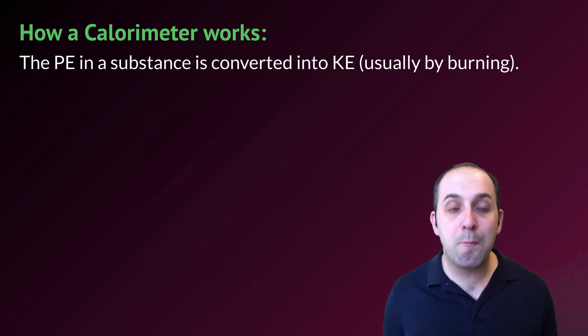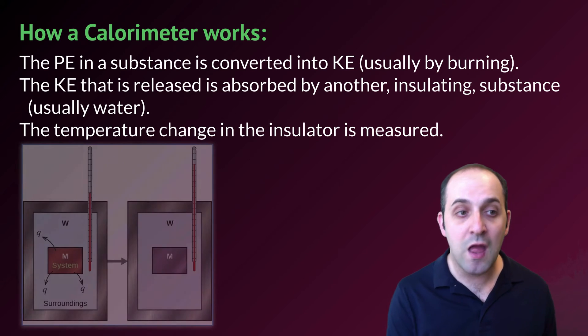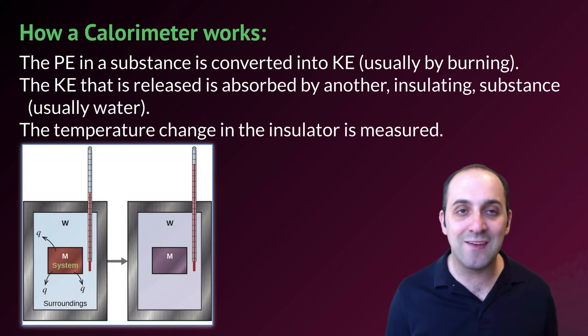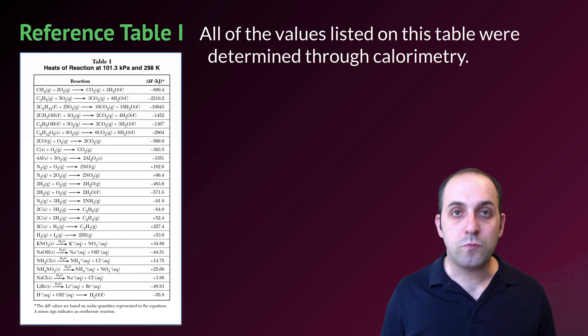The way a calorimeter works is pretty simple. The potential energy in a substance is converted into kinetic energy, usually by burning the substance. The kinetic energy that's released is then going to be absorbed by an insulating substance, which is often water though it doesn't have to be. And then the temperature change in the insulator is measured, and by measuring the temperature change and doing a bit of math, we can figure out how much energy was initially stored in our substance.